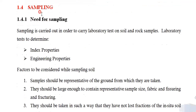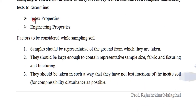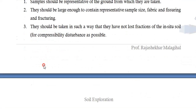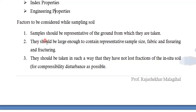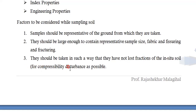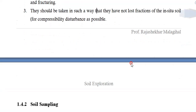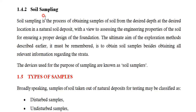Now coming to Sampling. Sampling is the collection of some amount of sample from the field to the laboratory to check their properties. The need for sampling is to determine index properties and engineering properties. Factors to be considered while sampling: the sample should be representative — not randomly collected — and should be large enough to contain representative sample size, fabric, and features. Samples should be taken in such a way that no fractions, water content, or other properties are lost.